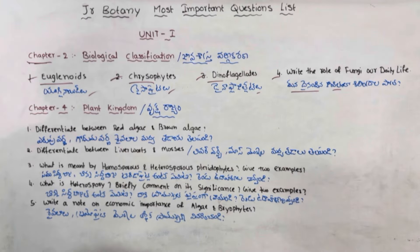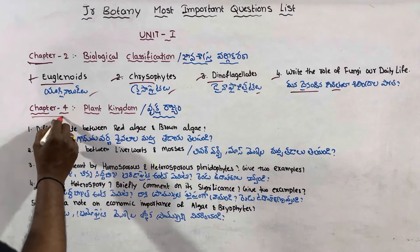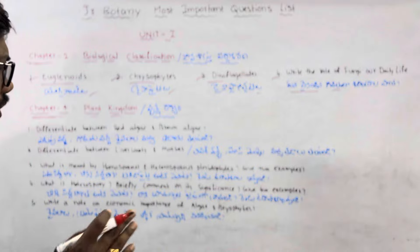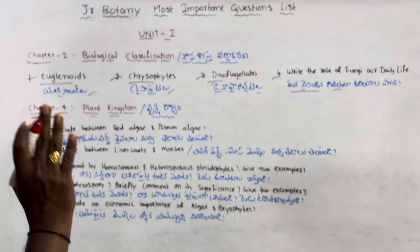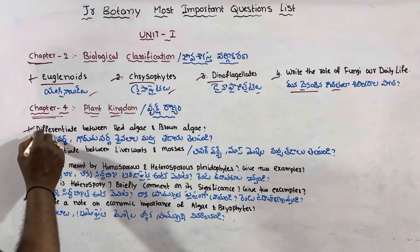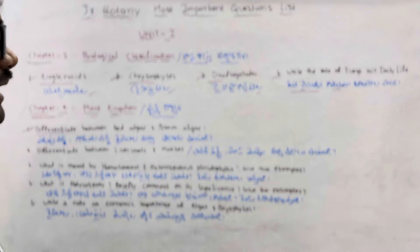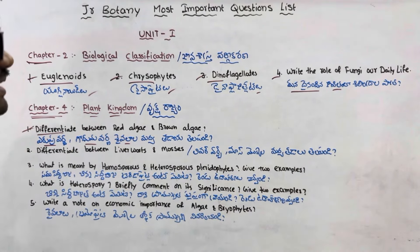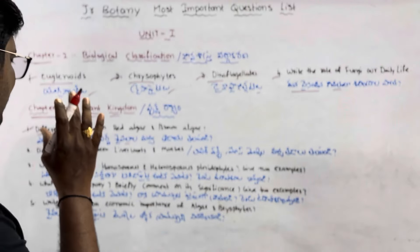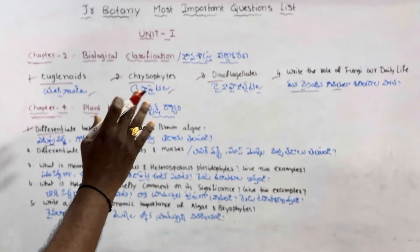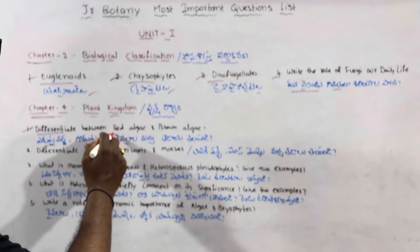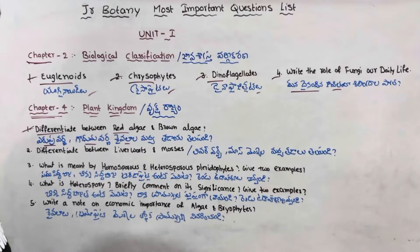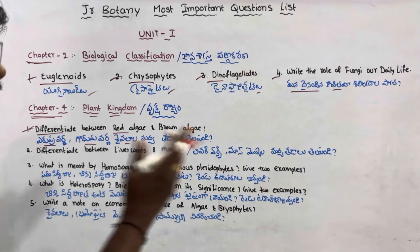Next is Chapter 4, the Plant Kingdom. This chapter is very important. The first key question is the difference between red algae and brown algae. You should be able to clearly differentiate between the two groups, as this is an important four marks question.